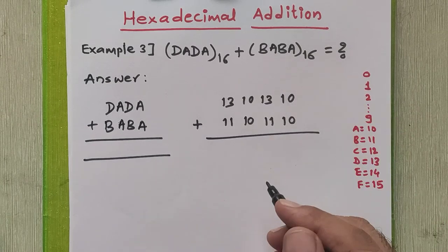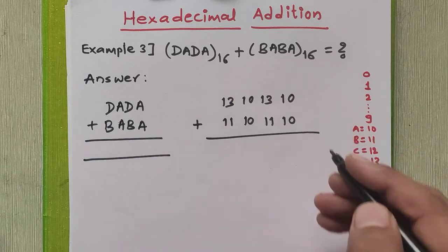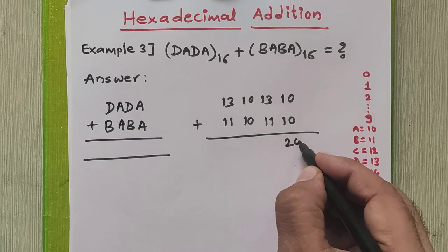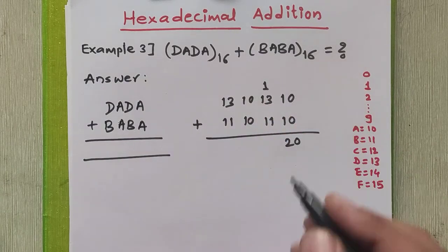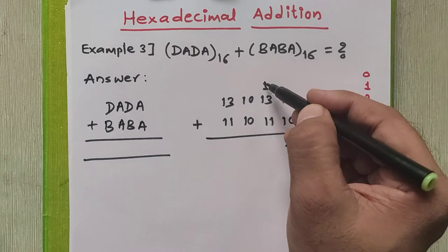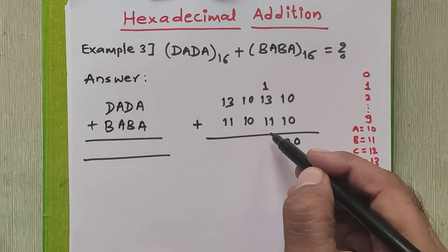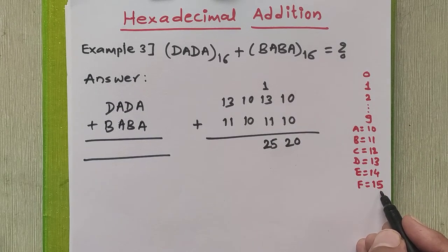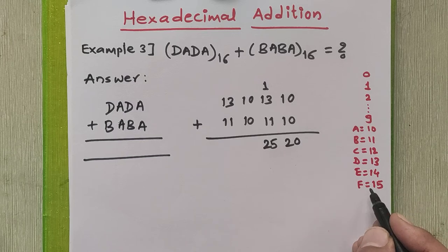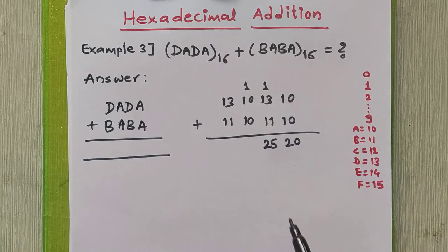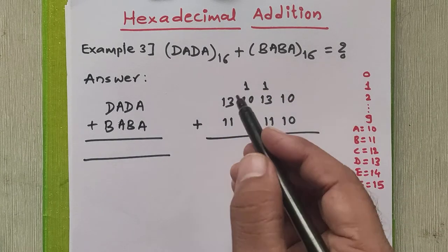To perform direct addition, we add the rightmost column: 10 plus 10 is 20, and 20 exceeds the last valid digit of the hexadecimal number system. So we write 20 here and generate a carry to the next step. Adding that carry of 1 with 13 and 11 gives 25. Since 25 is greater than 15, the last valid number, we write 25 and generate another carry.